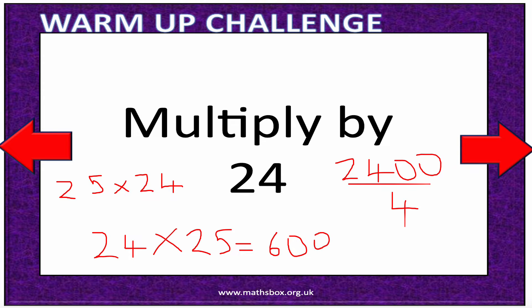So, timesing by 25, just to summarize, is the same as multiplying by 100 and then dividing by 4. Because 100 divided by 4 is 25, and putting that times sign in, that's the same as multiplying by 25. So the answer is 600.